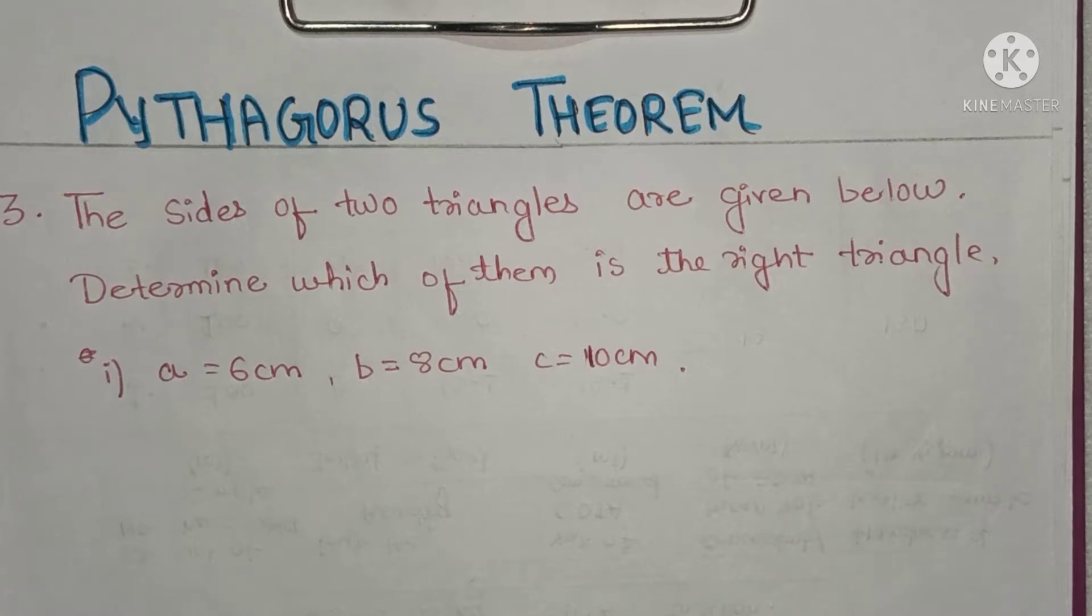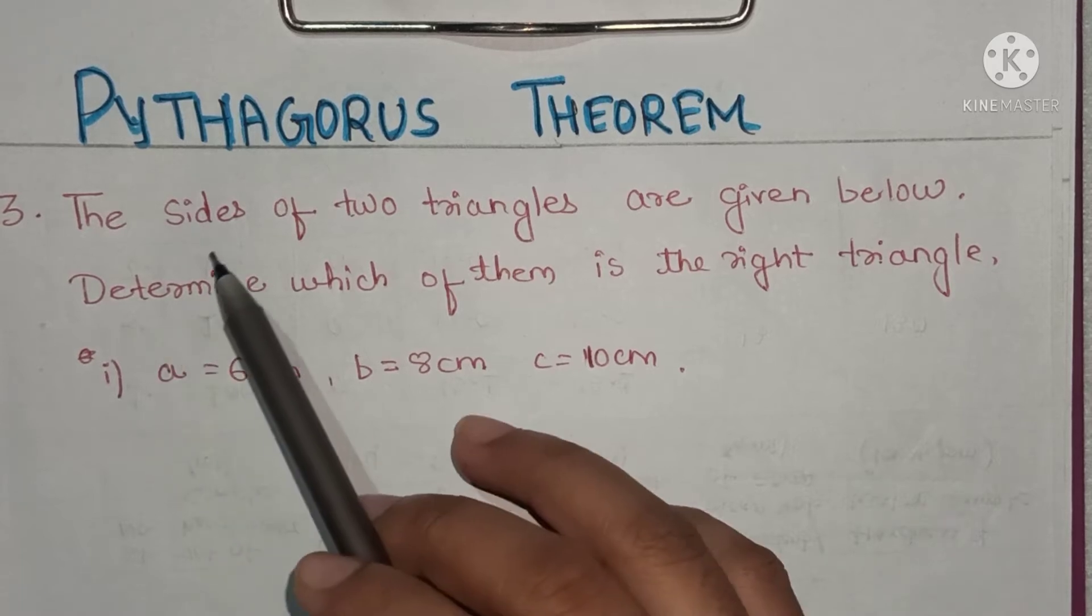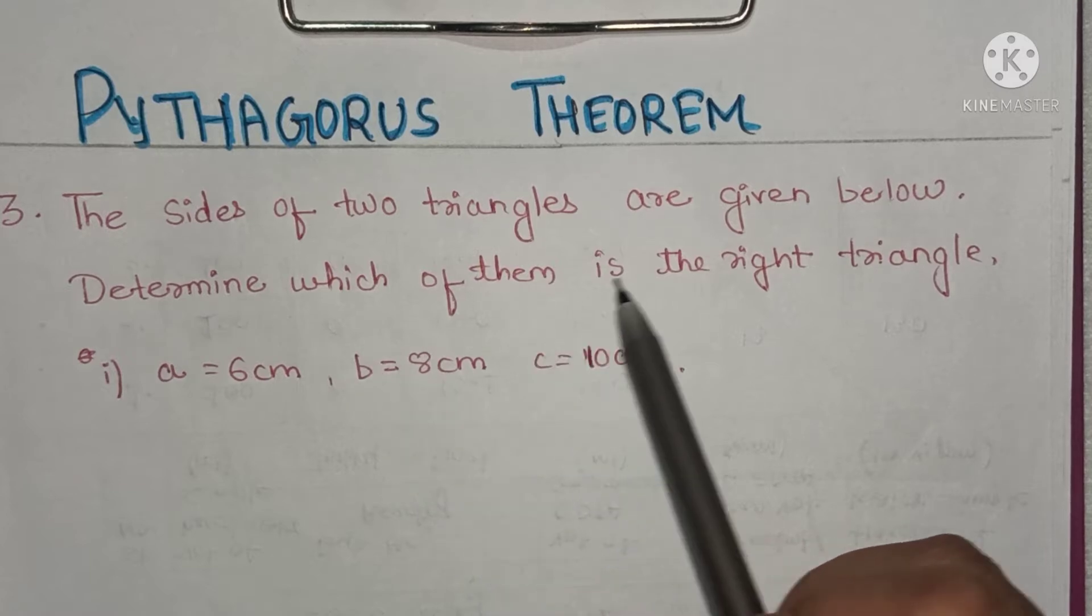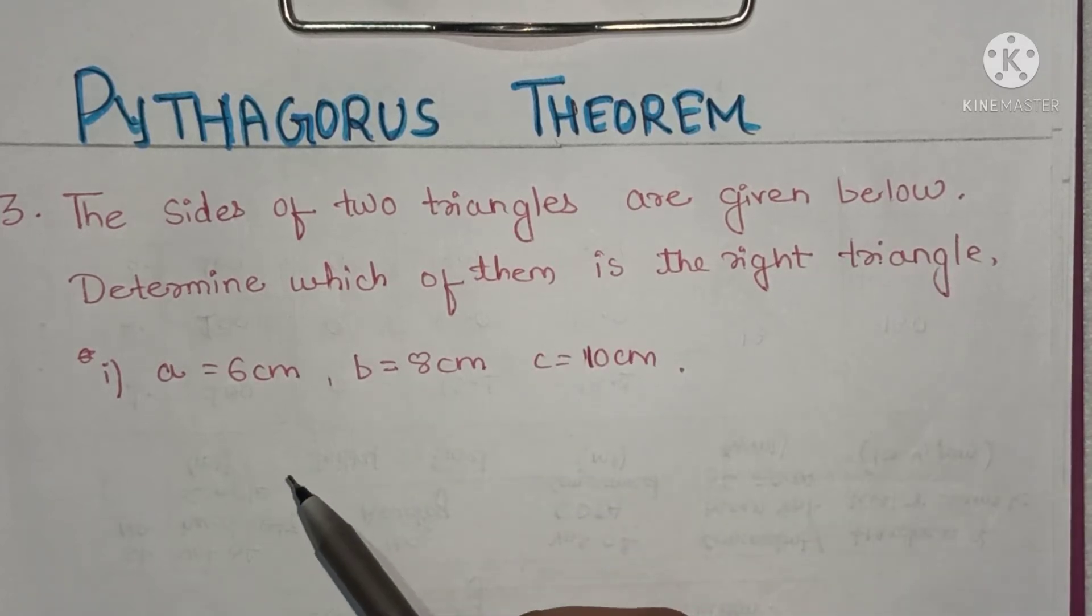Welcome back children, welcome to e-learning mathematics classes. Today we will continue with the Pythagoras theorem, question number three. The sides of two triangles are given below. Determine which of them is the right triangle.